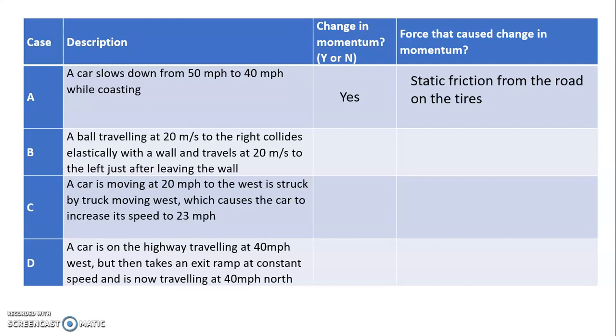In case B, we have a ball traveling at 20 meters per second to the right. It hits a wall. And it's going 20 meters per second to the left just after leaving the wall. So you look at this and you might say, okay, well, the mass of the ball didn't change. And it's going 20 meters per second before and after. However, the velocity did change because velocity is a vector. It was moving at 20 meters per second to the right. And now it's moving at 20 meters per second to the left.